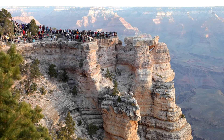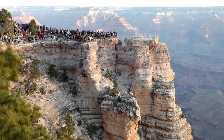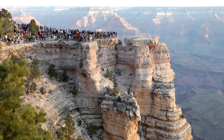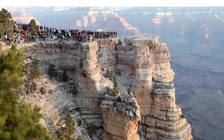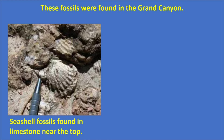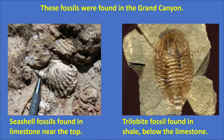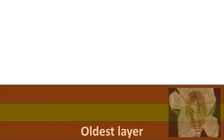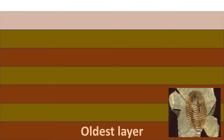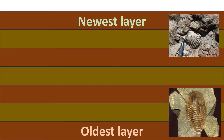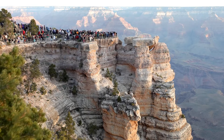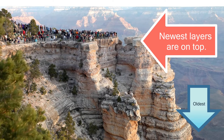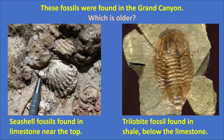The area that we now call the Grand Canyon has been covered by water on several occasions. During those times, this area likely had a flat floor that was the bottom of a large sea or other body of water. These shell fossils were found in limestone near the top of the Grand Canyon. This fossil of a trilobite was found in the layer of shale below the limestone. We know that sedimentary rock is formed from the bottom up, so the first layer is the oldest and the top layer is the newest. Therefore, any fossils found in the lower levels are older than those in the upper levels — since the trilobite was found in a layer below the seashells, the trilobite is older than the seashells.